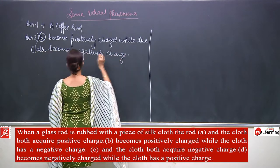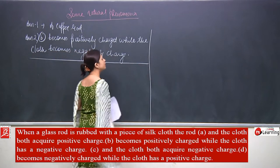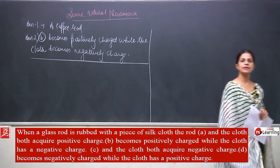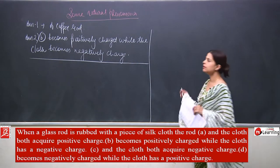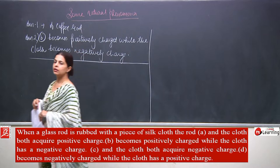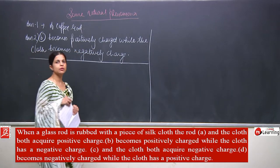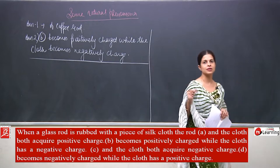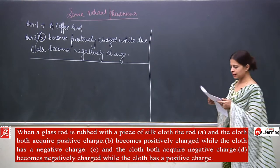So the answer is B — the rod becomes positively charged while the cloth becomes negatively charged. We have studied this many times, and I discussed this answer while explaining the chapter. We have also discussed a few more examples related to the same topic of charges.